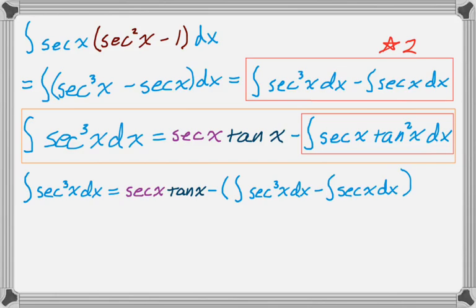And that's good, because we have secant cubed, the integral of secant cubed on both sides, but they have opposite signs, so when I distribute that negative sign, it allows me to eventually simplify this thing.